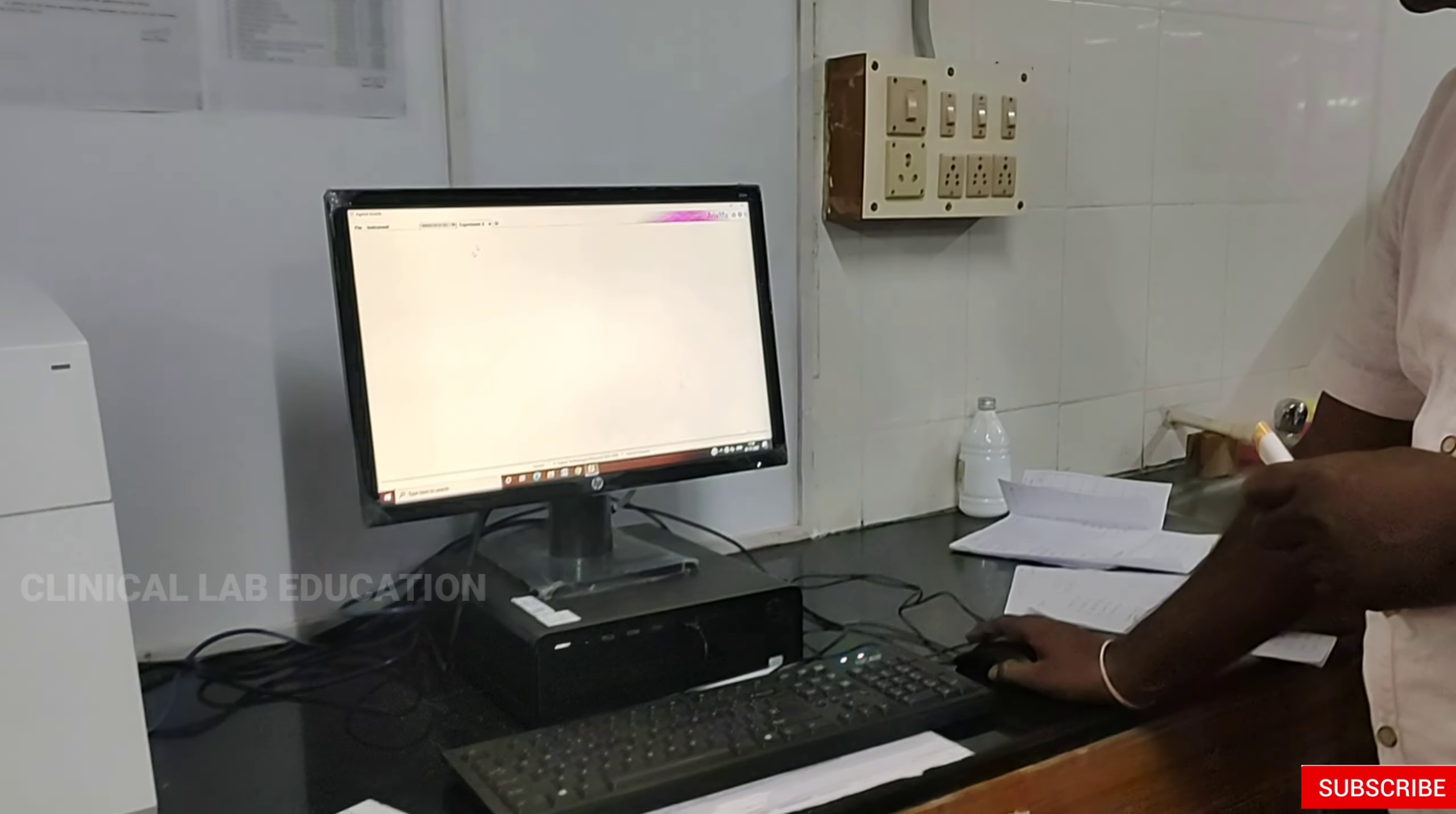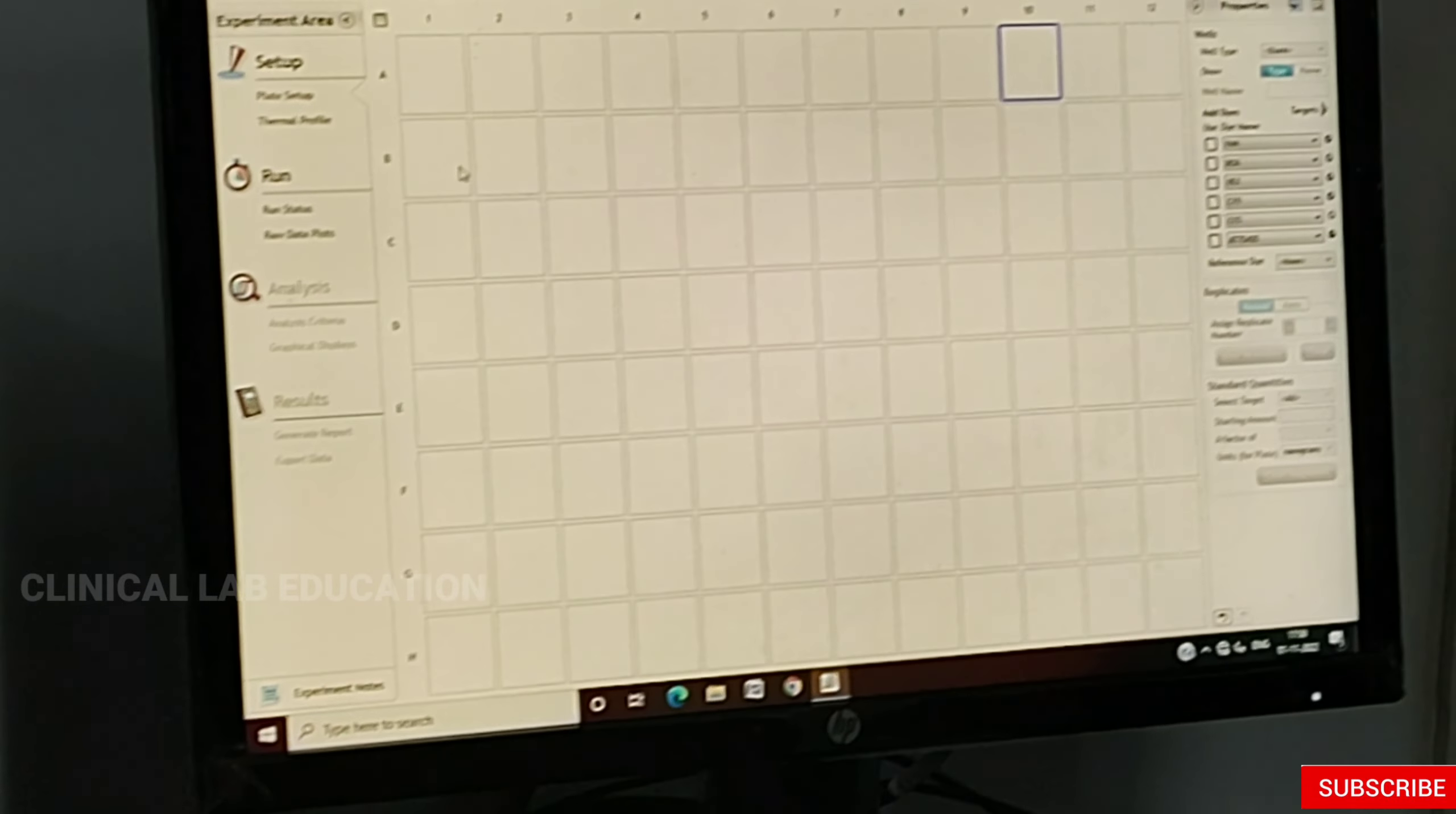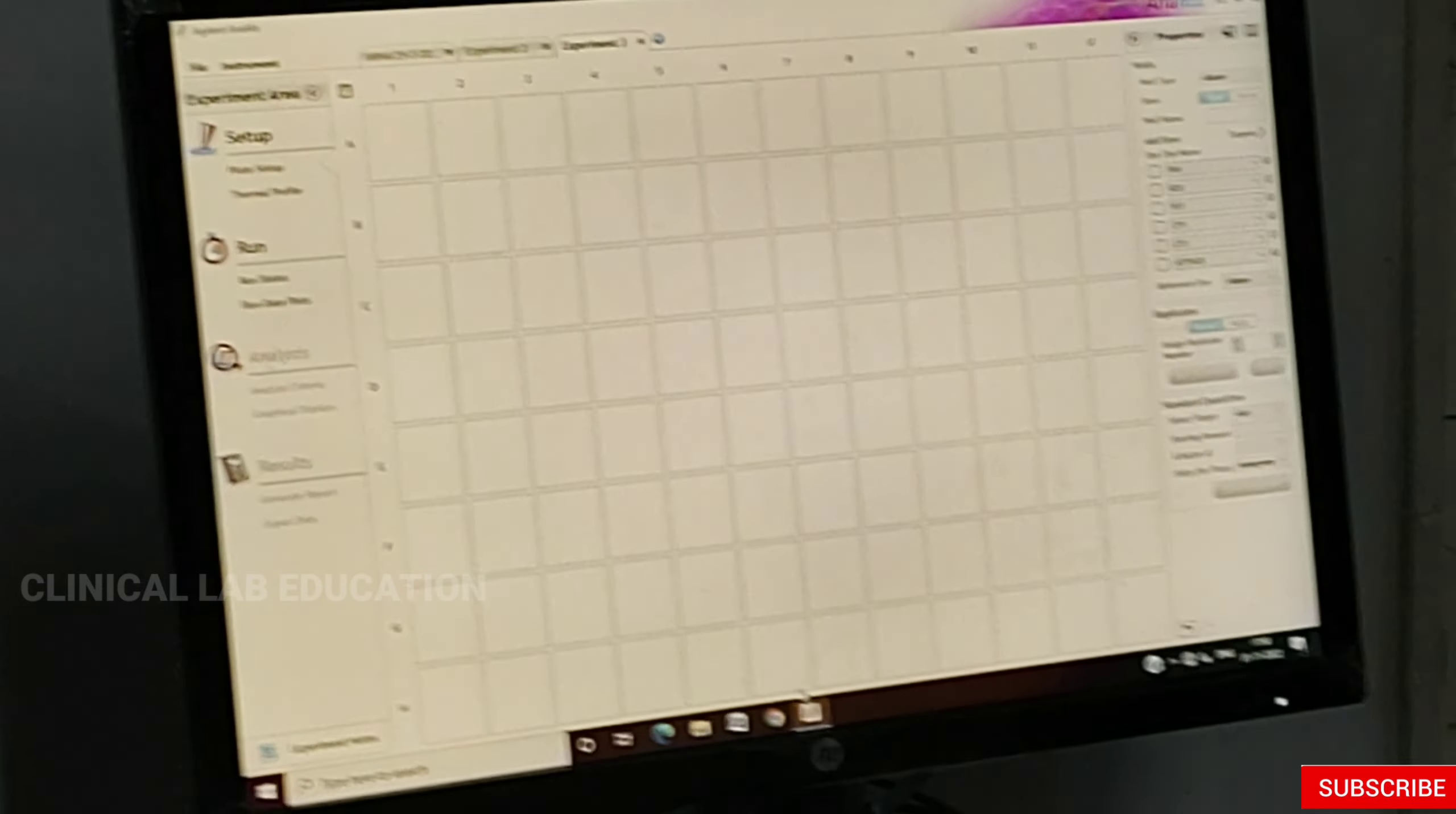Go for new experiment. It will appear like this, or you can go for new here also. We are using the flow. As per your protocol sheet, we have to select the wells. If you want to select all 96 wells, just click this and 96 wells will be selected. If you want to select only six wells, you can drag only six.